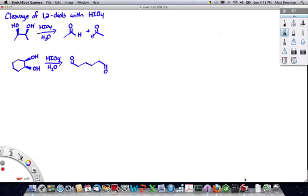When you have a 1,2-diol and you treat it with HIO4, also referred to as periodic acid, what happens is you split the carbon-carbon bond, splitting the two carbons that the two oxygens are attached to.